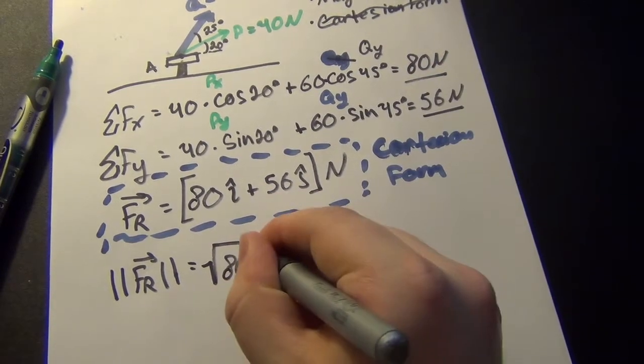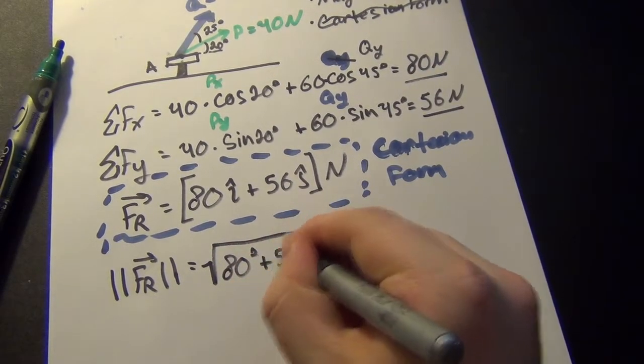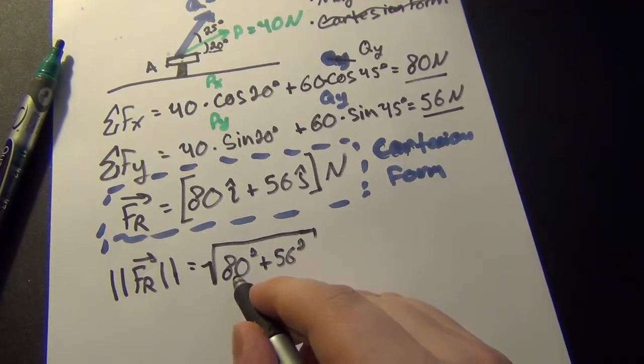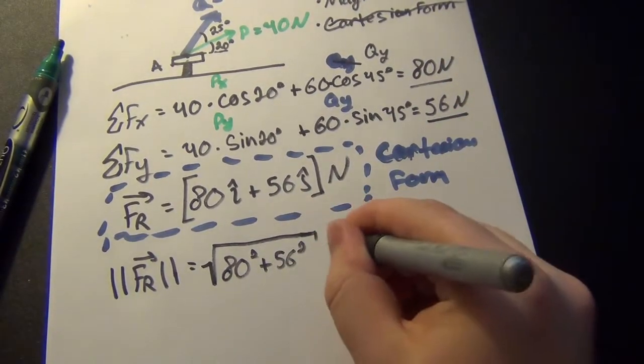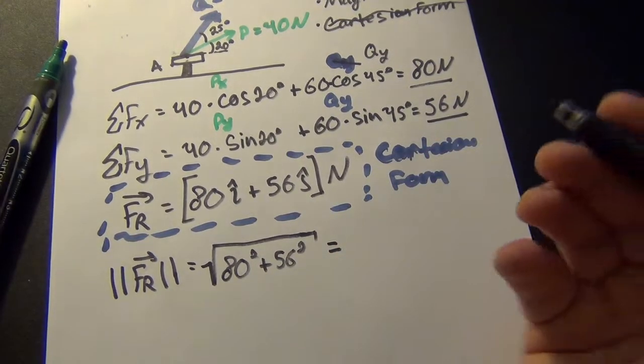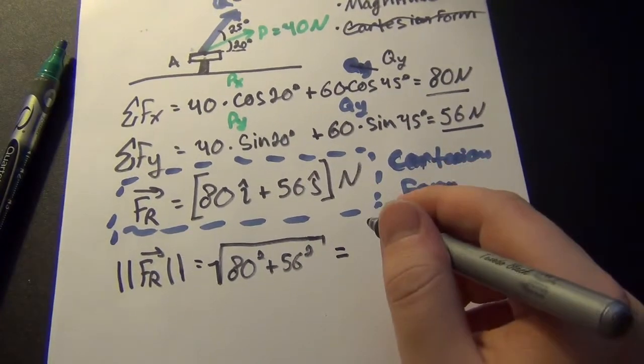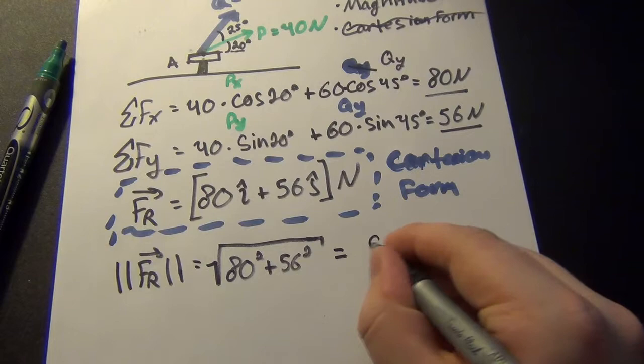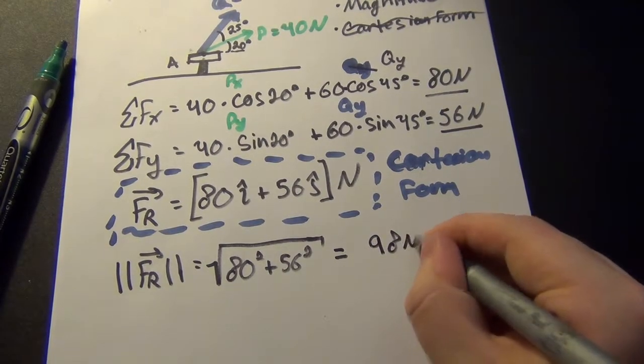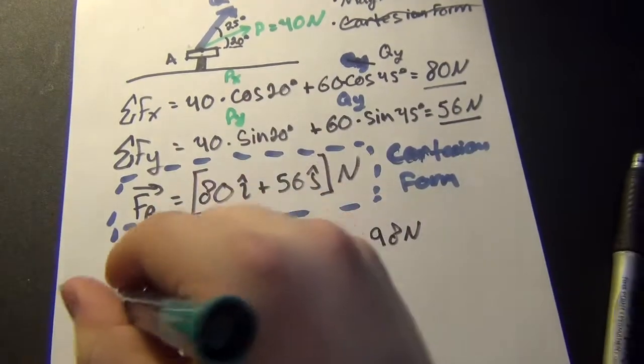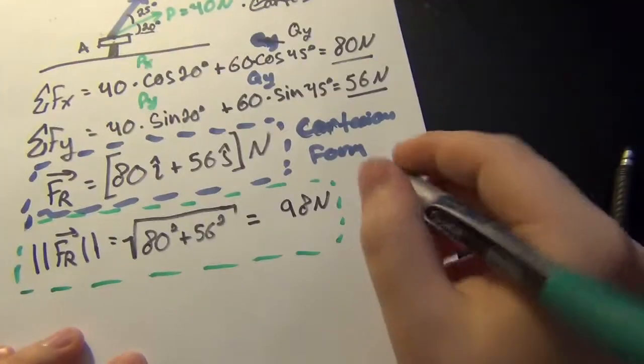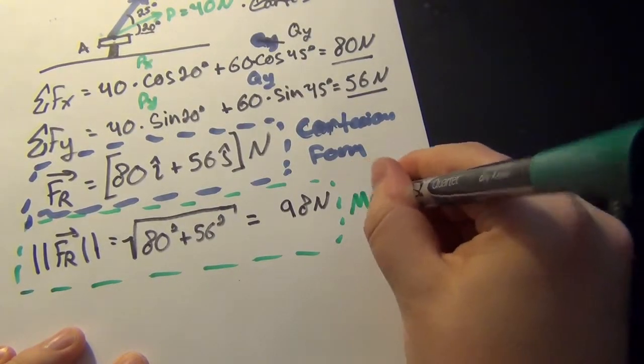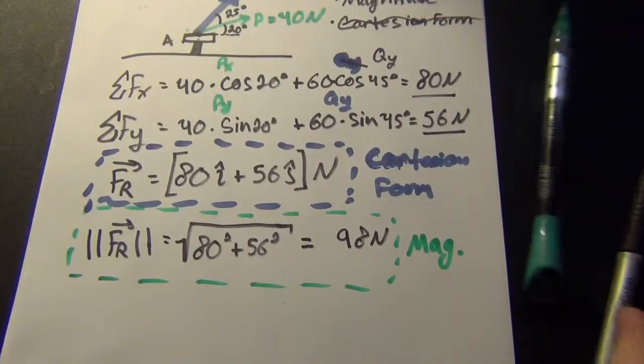you take 80 squared, 56 squared. So this is just the X component of the force squared plus the Y component of the force squared, just like solving a triangle, which it is if you add the vectors vectorially. And once you do the math with this, you'll find out that it's 98 Newtons. And this is our other answer. So this is going to be the magnitude.